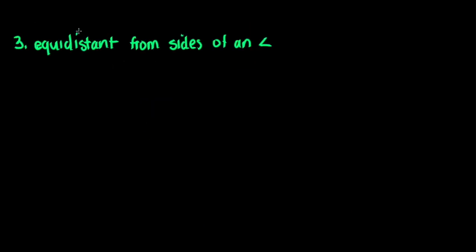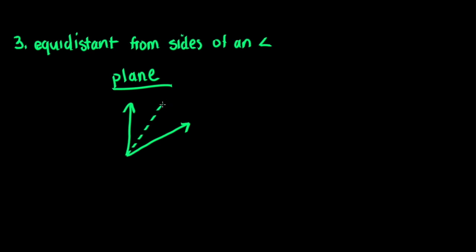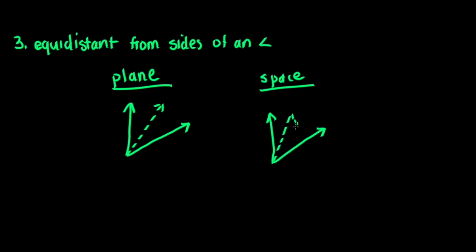The third of the famous five is equidistant from the sides of an angle. In a plane, if we have an angle and we're trying to find the locus of points equidistant from that angle, that is going to be an angle bisector. If we're trying to find the locus of points equidistant from the sides of an angle in space, we have a similar scenario, and that is also going to be an angle bisector — however, this angle bisector is going to be a plane.